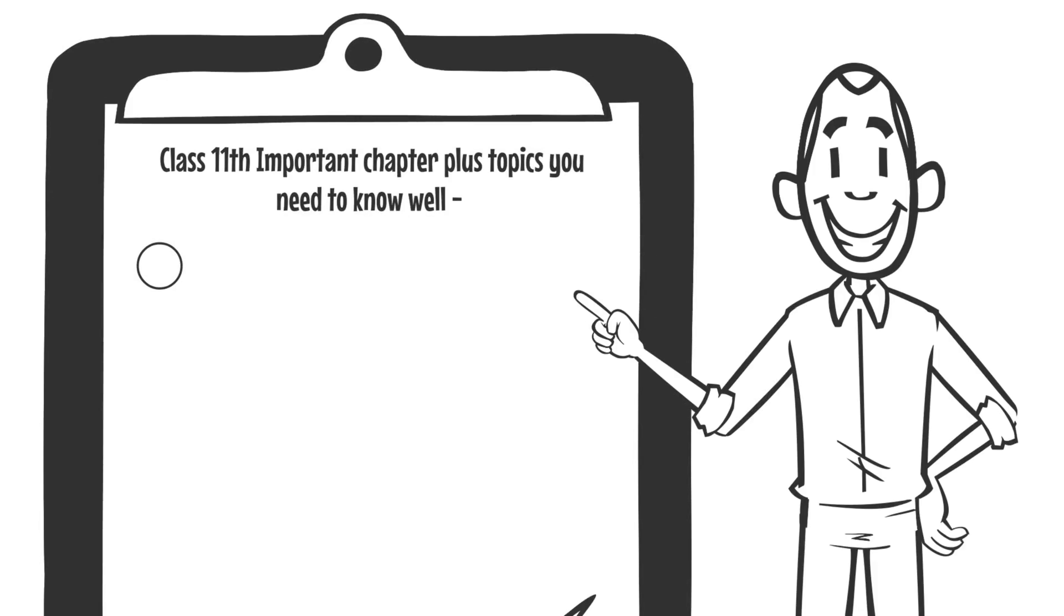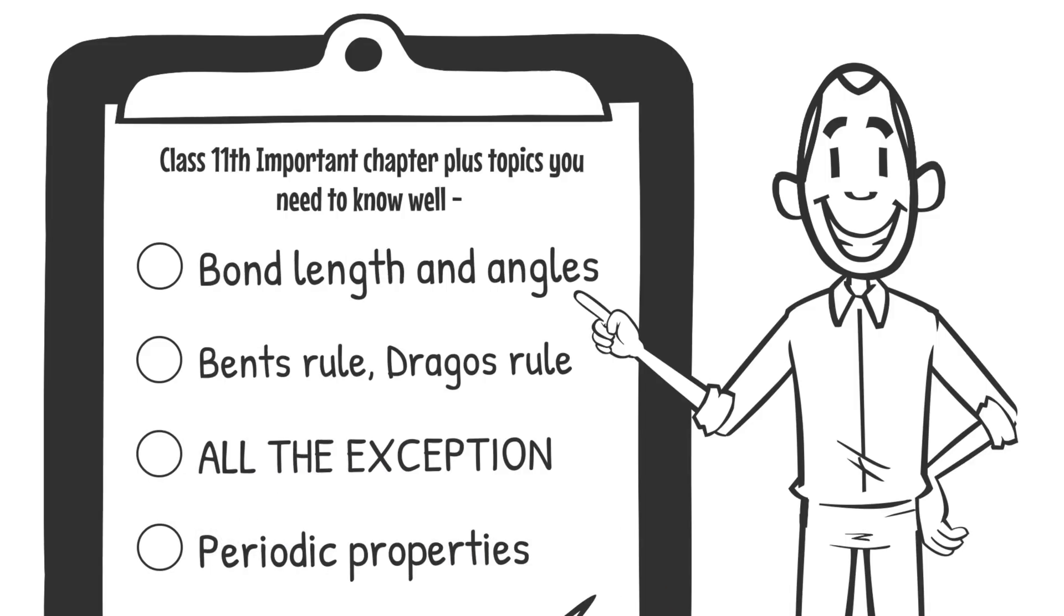Chemical bonding. A very consistent and good number of questions plus involved in all other chapters. The topics I am telling, make sure you do these well for the exam. The first is molecular orbital theory. The second is Fajan's rule. Third one, shape and hybridization. Bond length and angles. Bent's rule. Drago's rule. And most importantly, all the exceptions in inorganic chemistry. So that if you get a sub part from these chapters in any of the questions, you are able to do them well.